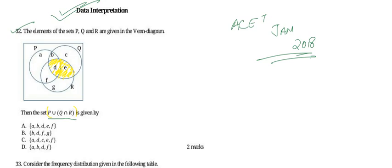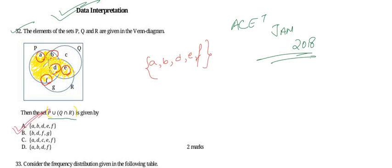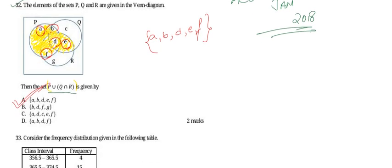Next we take P union that part, so we take the total P together. This shaded region is the required region. The points involved are A, B, D, E, and F. So the required set is {A, B, D, E, F}. Option A matches our answer, hence option A is the correct answer to question 32.